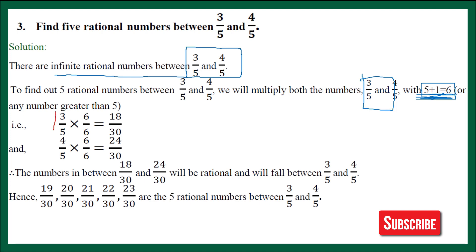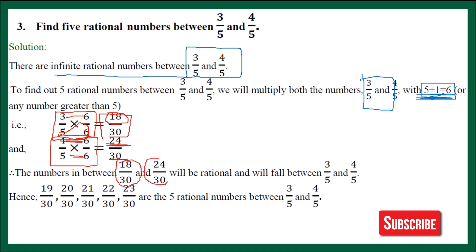So I have multiplied and divided 3 upon 5 by 6, and similarly multiplied and divided 4 upon 5 by 6 as well. The fraction 3 upon 5 becomes 18 upon 30 — 3 multiplied by 6 gives 18 in the numerator, and 5 multiplied by 6 gives 30 in the denominator. Similarly, 4 multiplied by 6 gives 24, and 5 multiplied by 6 gives 30. So our two fractions become 18 upon 30 and 24 upon 30.